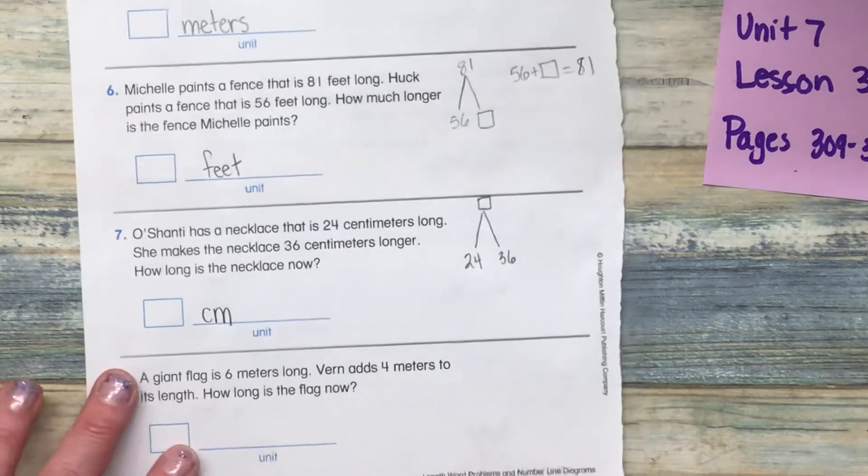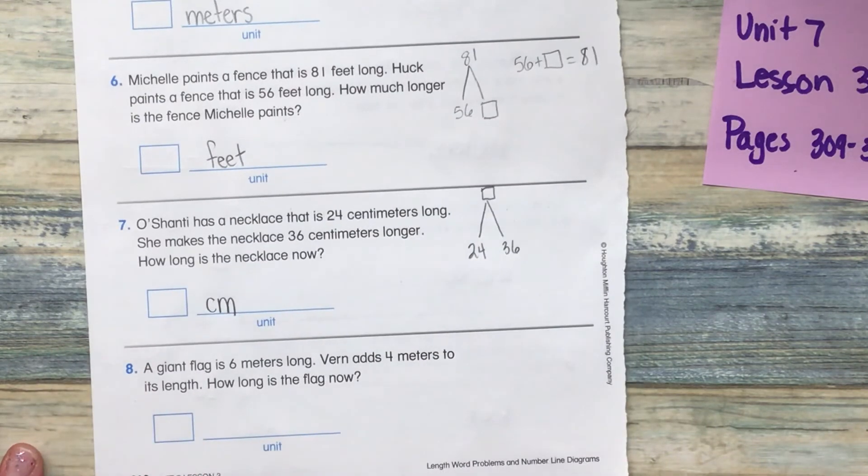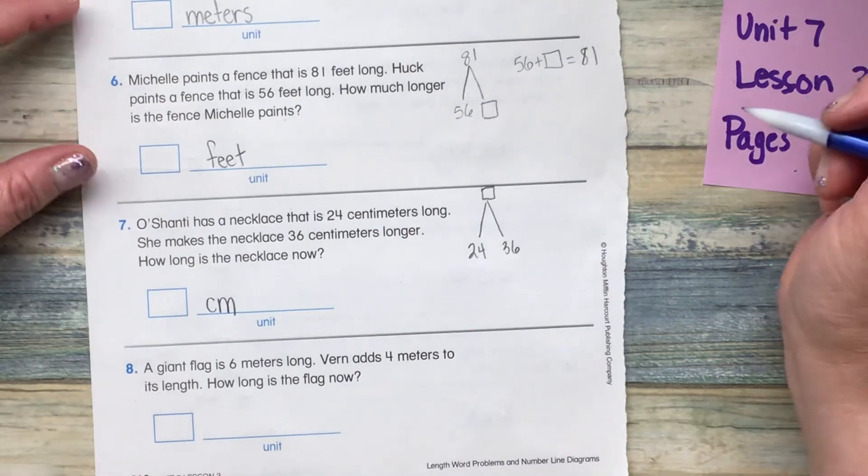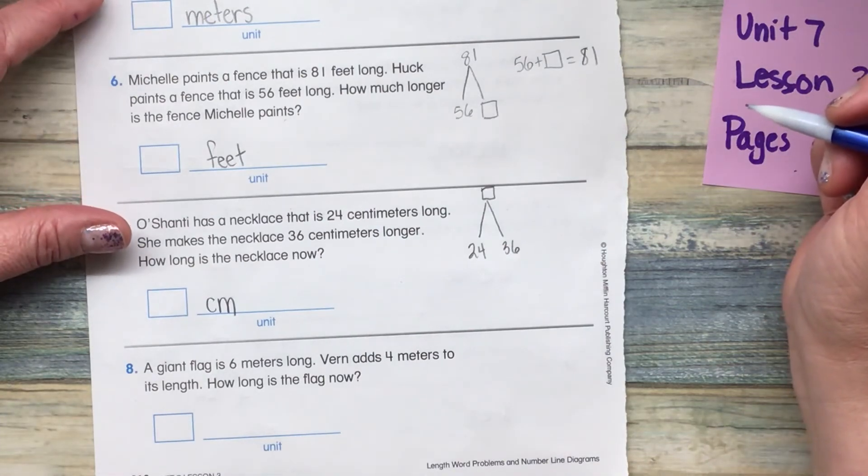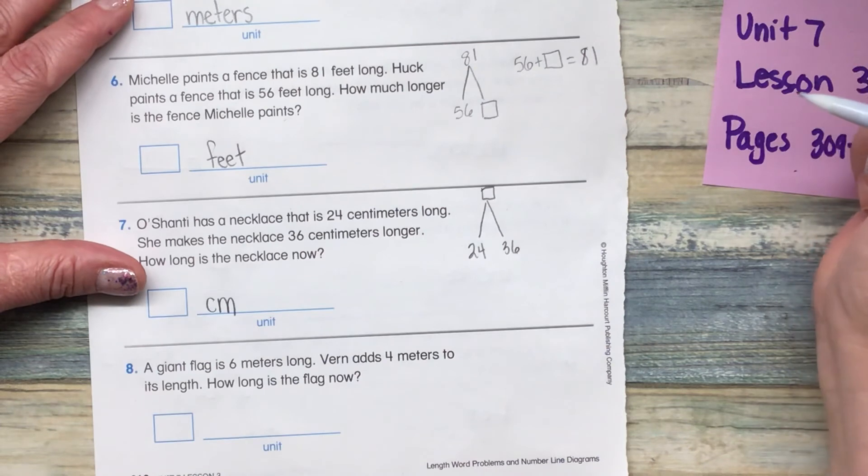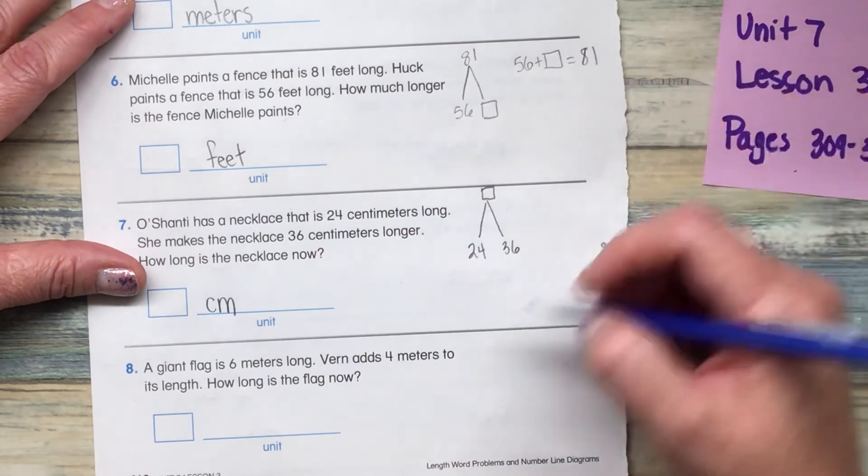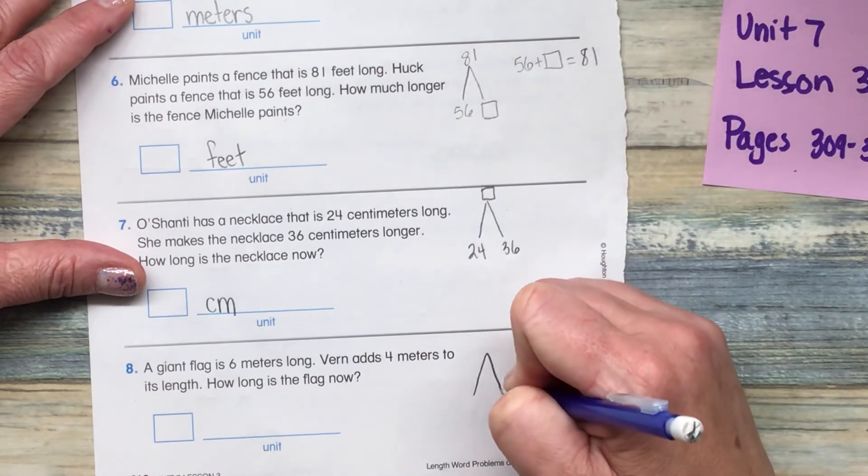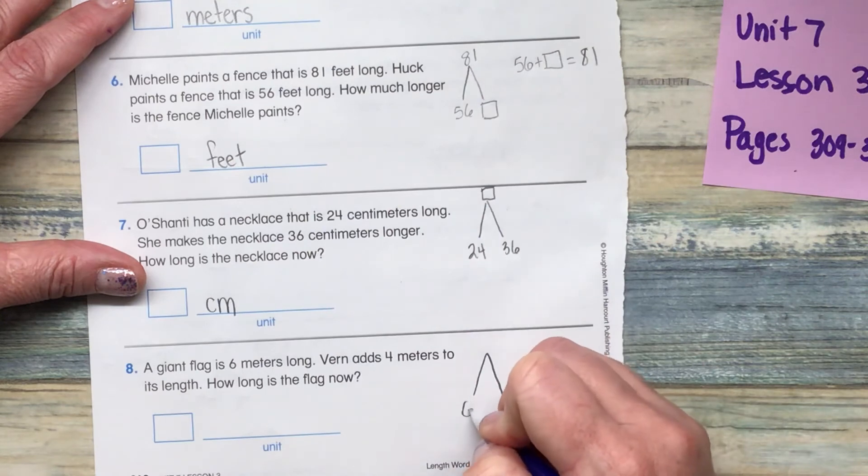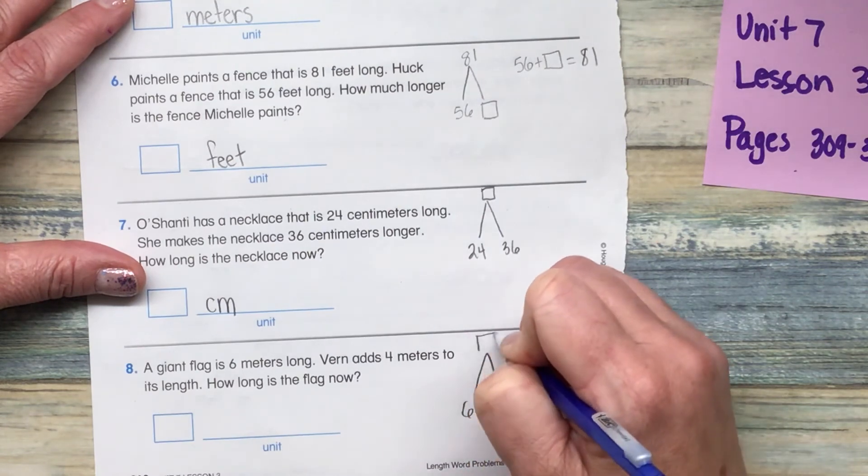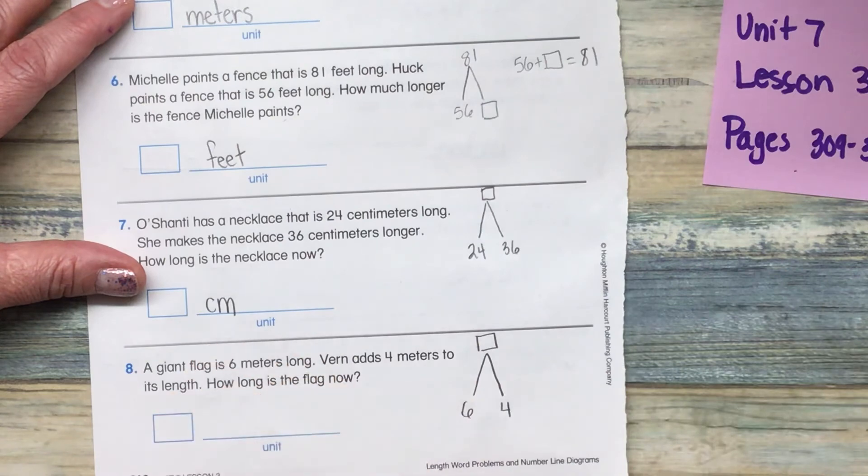Okay, our last one. A giant flag is six meters long. Vern adds four meters to its length. How long is the flag now? So it starts with six. They add four. How many do we have total?